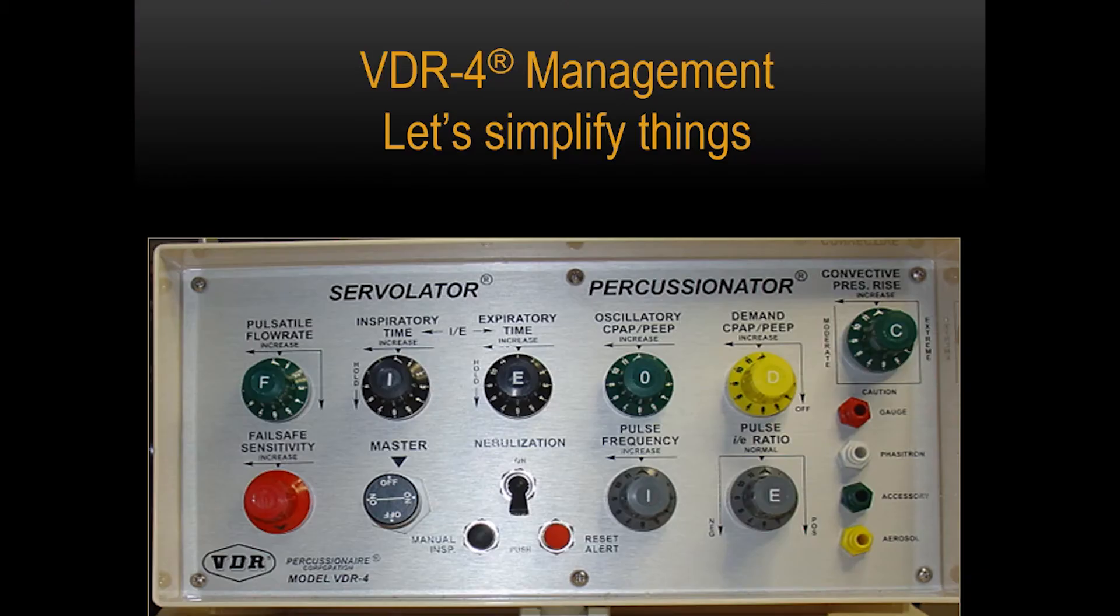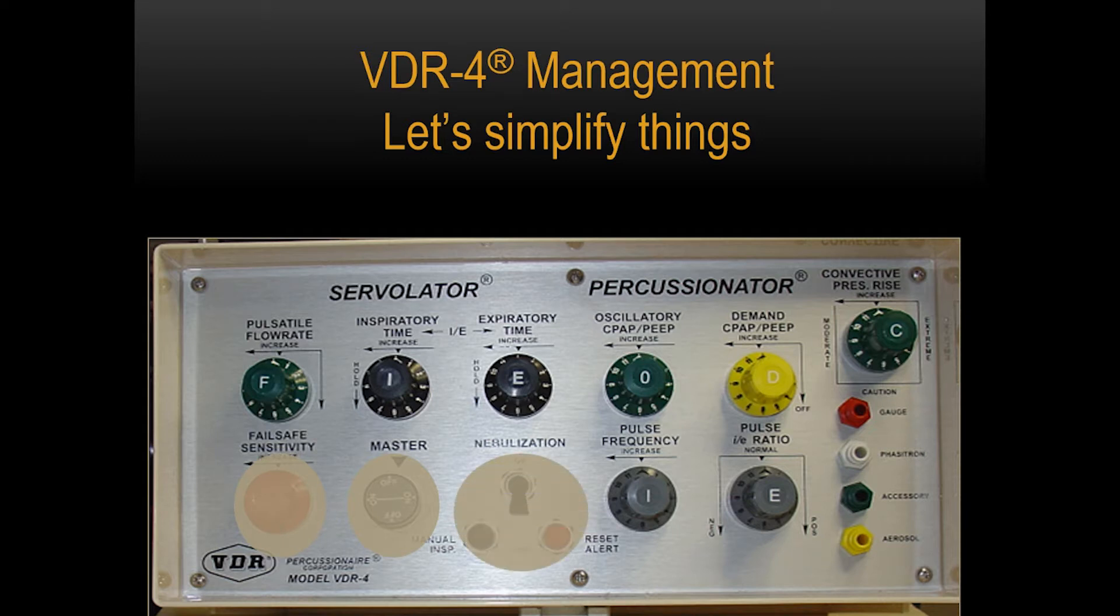So let's simplify things a little bit with the VDR4. I turn the ventilator on. I set my alarms. I turn the nebulizer on. I set my pulse IE ratio at a one-to-one IE ratio. And in 95% of my patients or more, I'm not going to make an adjustment to that. I don't have my demand CPAP turned on to start with in general. And I don't turn on my convective pressure rise in general to start with. So now I'm down to really five controls, which are my main controls to adjust the ventilator.